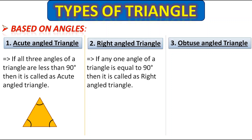Next is the right angle triangle. If any one angle of a triangle is equal to 90 degrees — as you know, 90 degrees means a right angle — then it is called a right angle triangle. This is a right angle triangle because it has one angle equal to 90 degrees.